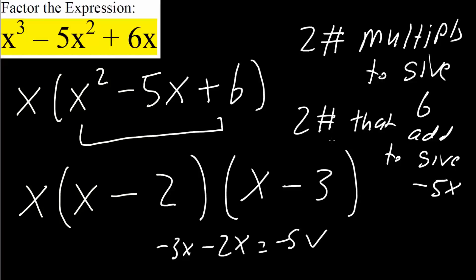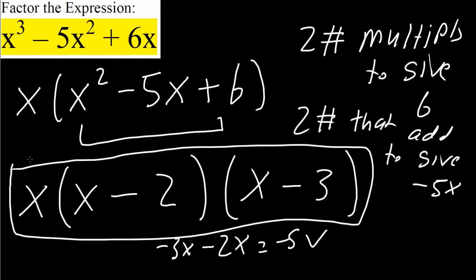So those are two numbers that add to give negative 5. For this problem, the final answer is x times (x minus 3) times (x minus 2). Now we'll move on to the second problem.